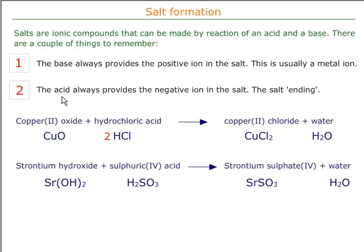From the reaction of an acid and a base, the acid always provides the negative ion in the salt. This gives the salt its ending. So sodium chloride — chloride is the ending. It must come from an acid that provides chloride ions.